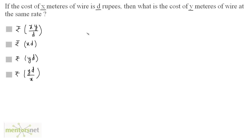We have two quantities here: the distance and the cost. The more the distance, the more the cost. So these two quantities are in direct proportion.